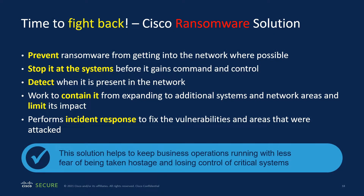Ransomware defense — we want to fight back. At the network layer there are lots of opportunities to gate ransomware from getting in. You want to stop it at the systems and mitigate connections to command and control. You want to stop it before it gets to a system, but you need defensive capabilities there as well. You want to detect when it's present on the network, contain it so it's not moving laterally, and ultimately you need incident response if a breach takes place, then action against the findings — if there are vulnerabilities, get them mitigated.